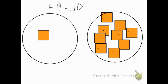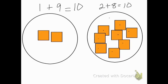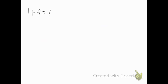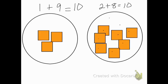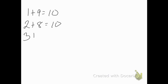Now we can change the amount in the first circle, but it's still going to total 10. So instead of having just one in that first circle, let's move one over. So now we still have 10 total, but we have a different amount — two and eight. So two plus eight equals 10. Let's move another one over. Now we have three in the first circle and seven in the second circle. So three plus seven equals 10.